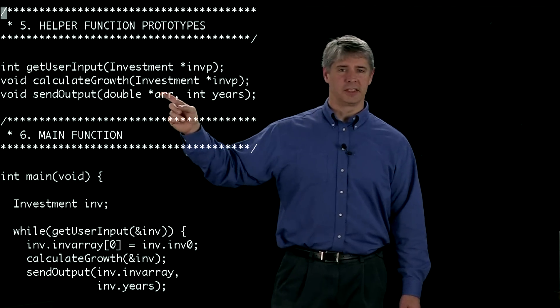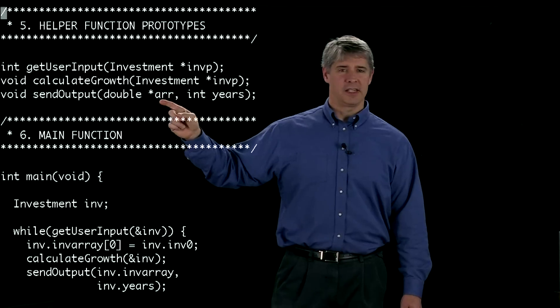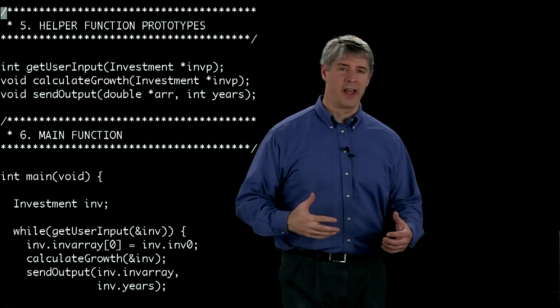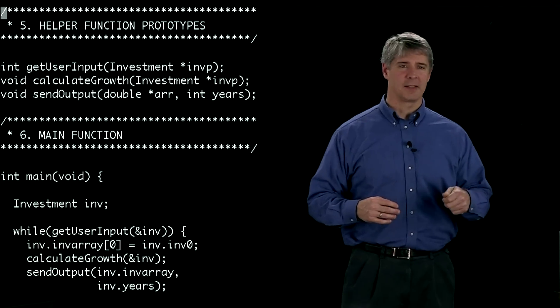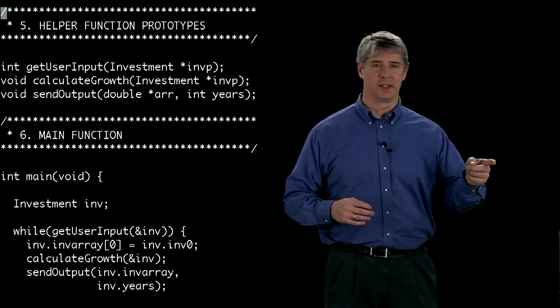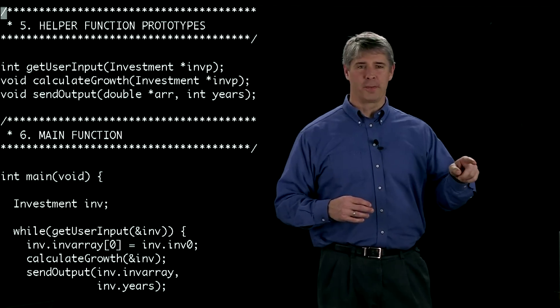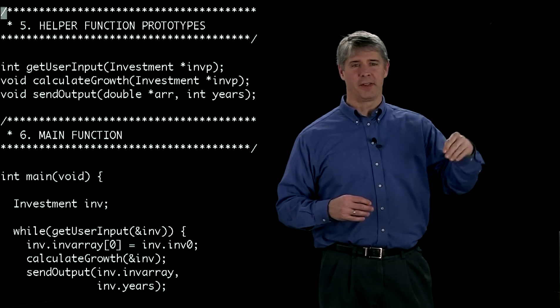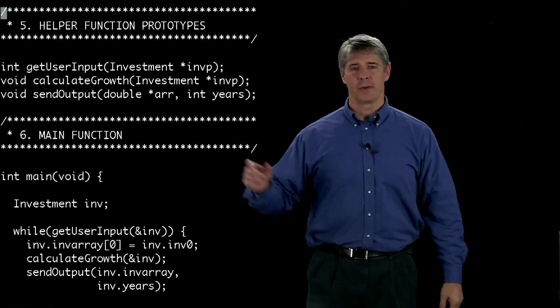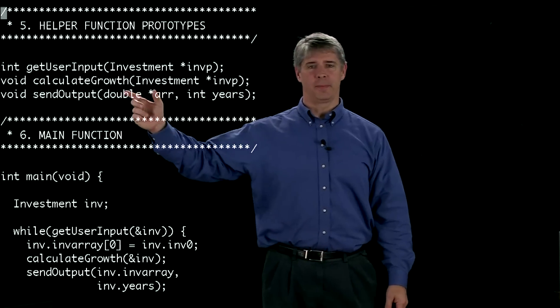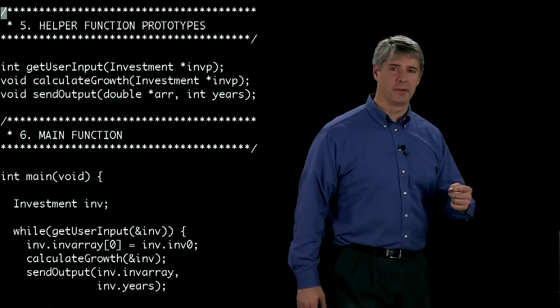This one's not a pointer, this is a pointer to type double. And this actually is used to pass an array. Instead of passing an entire array of values, what we do is we pass a pointer to the first element of the array. And then we know from there that the other elements in the array are the next memory addresses up from there. So we pass the value years and a pointer to the beginning of the array.